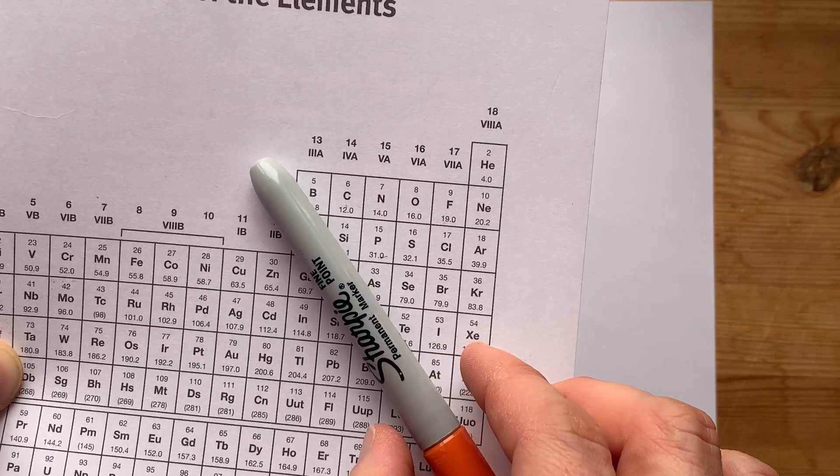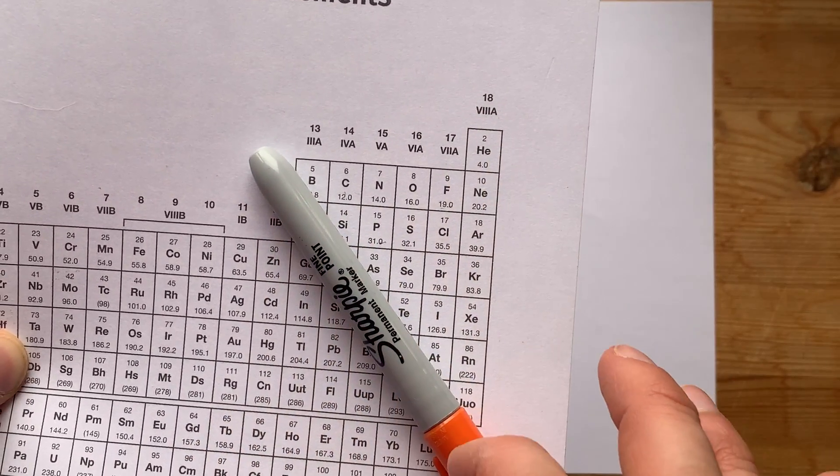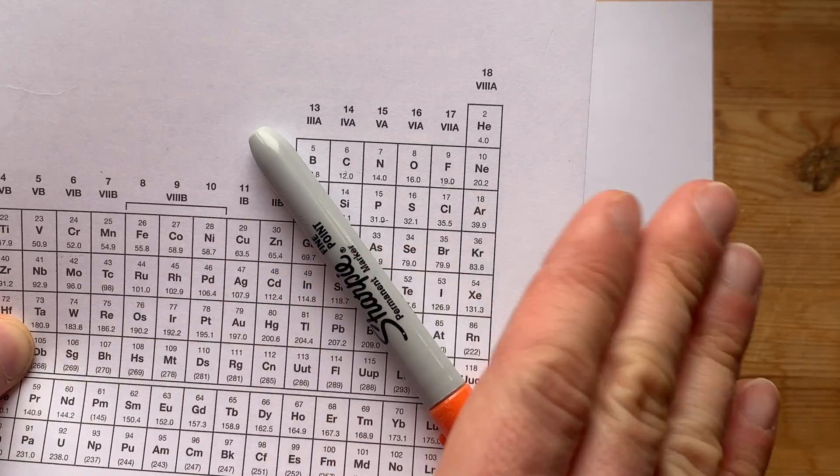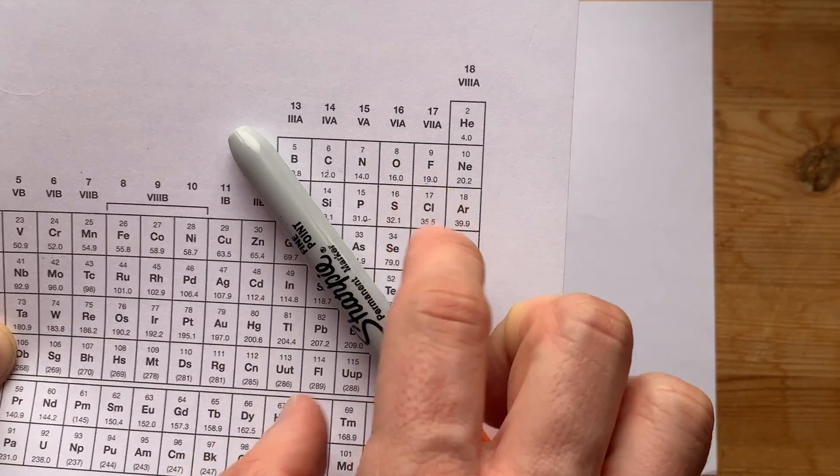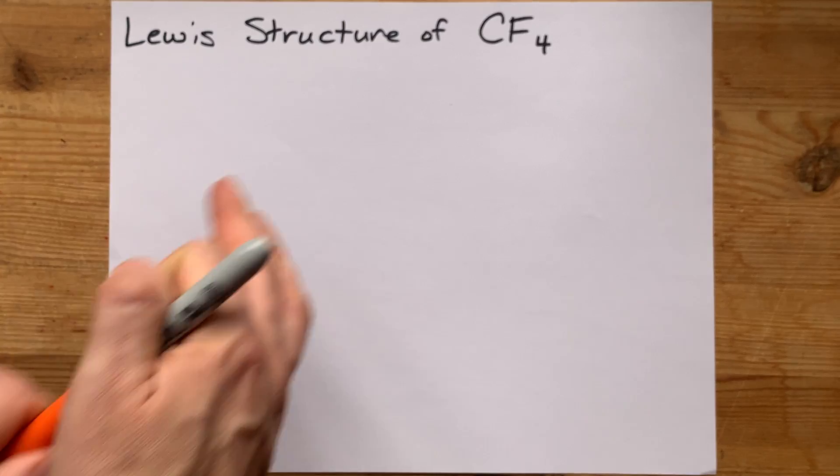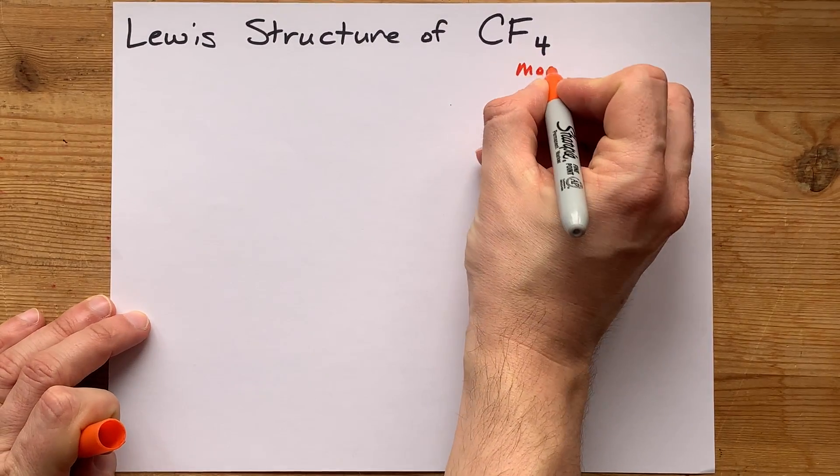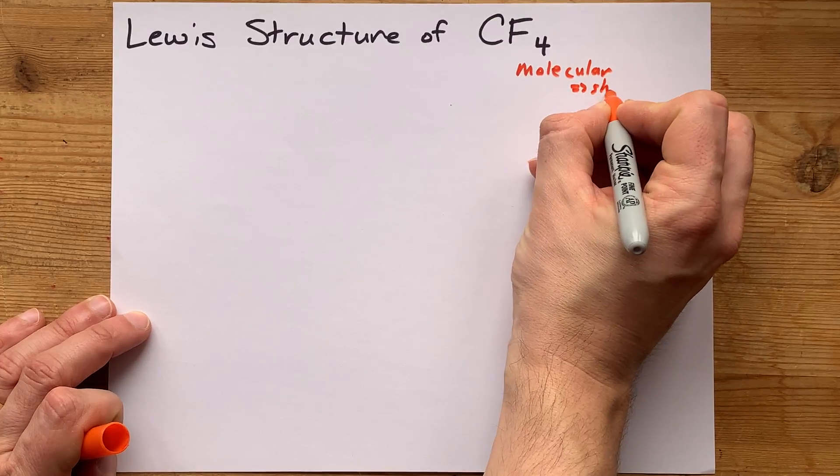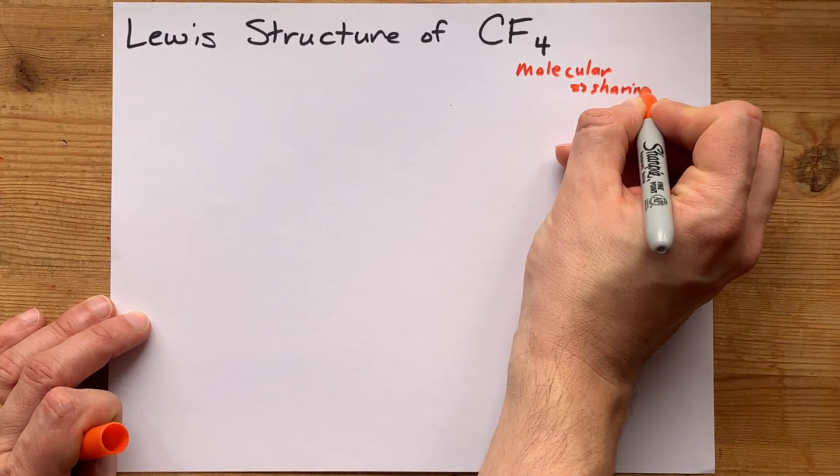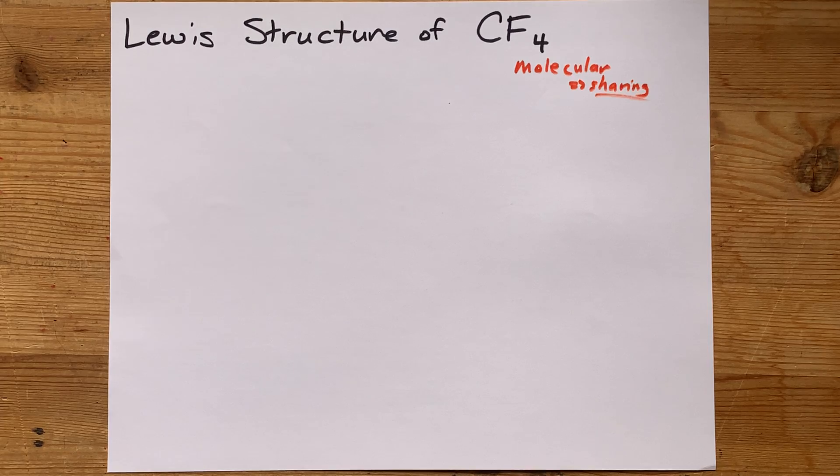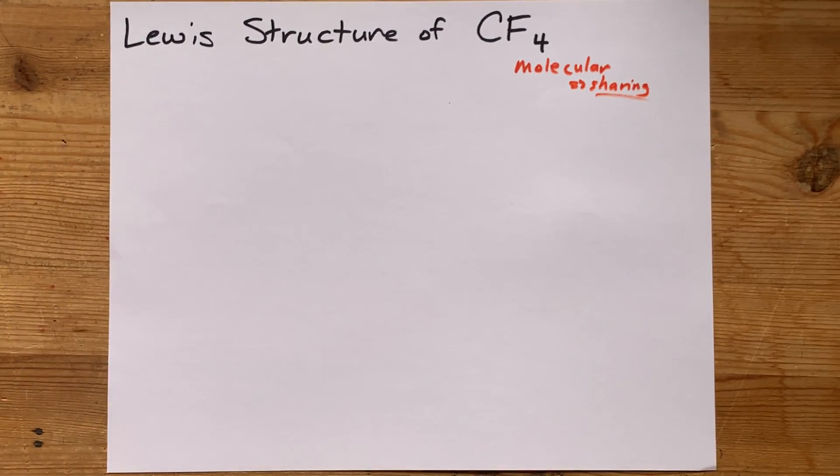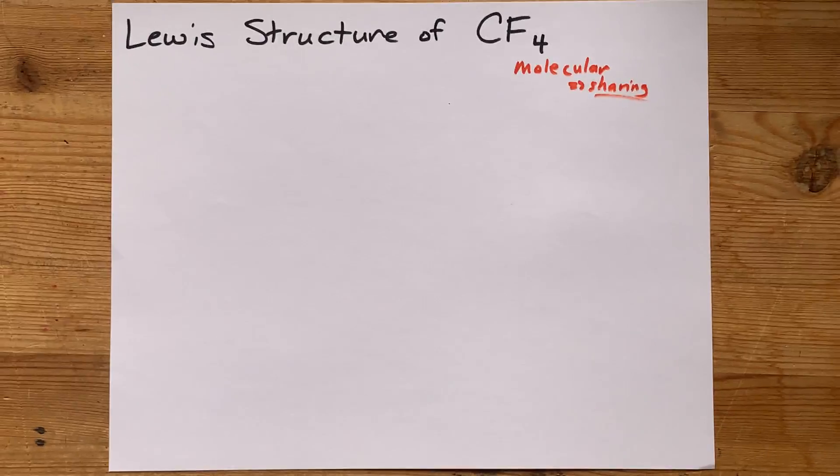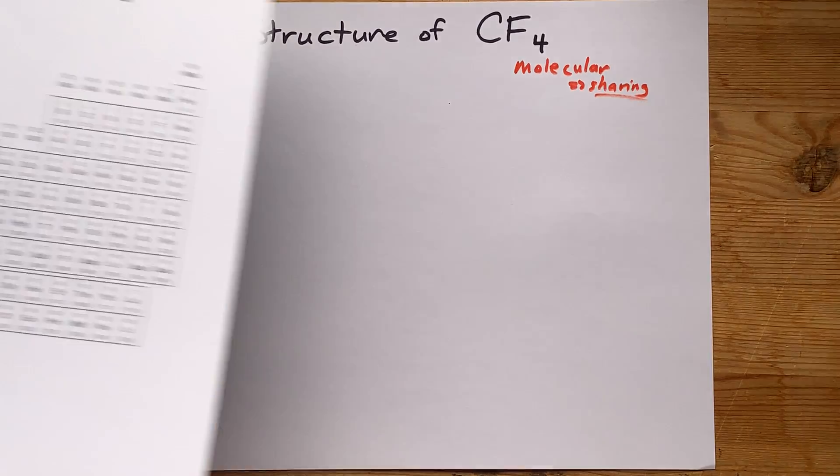Now you might remember there's a diagonal line down the periodic table here that separates metals from non-metals. Carbon and fluorine are both non-metals. That means this is going to be a molecular or covalent compound. The carbon and the fluorines are going to share electrons, instead of it being a transfer from one to the other. So let's figure out how many electrons we're dealing with here.